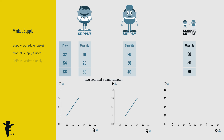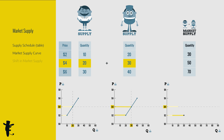Let's do a horizontal summation. At $2, the total cakes supplied is 10 plus 20 equals 30. At $4, it's 20 plus 30 equals 50. At $6, it's 30 plus 40 equals 70. So there you go, the market supply curve.